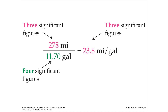Here's a division problem. If I have three significant figures and I'm dividing by four significant figures, my calculator is going to give me decimals all the way to the end. I can't use them all. I have to round to the smaller number of significant figures, so in this case I have to round to three.